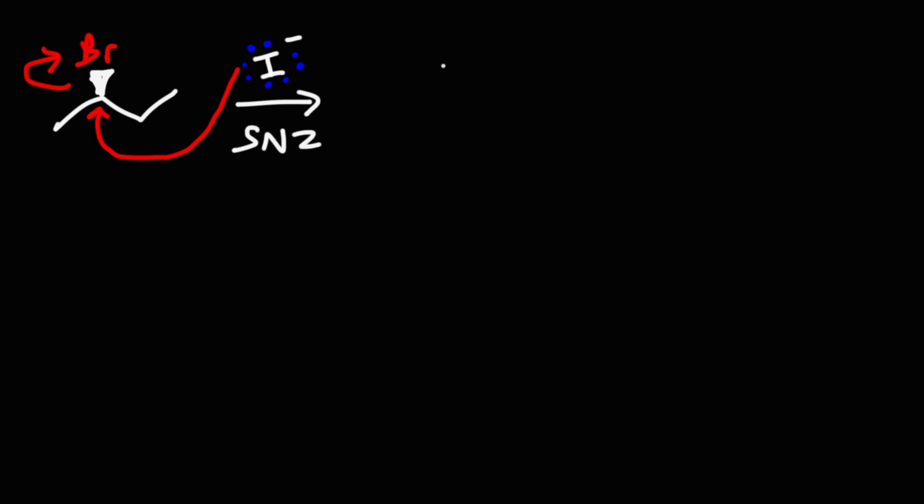Let's begin with the SN2 reaction. Here we have 2-bromobutane, and we're going to react it with potassium iodide — just drawing the anion, the iodide ion. It's a very good nucleophile, and it's going to attack the carbon and expel the leaving group. Because this is an SN2 reaction, we're going to get inversion of configuration. The iodide ion is going to be in the back, whereas the bromine atom was in the front.